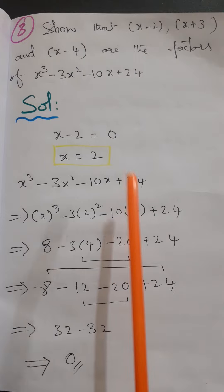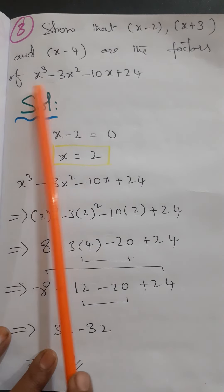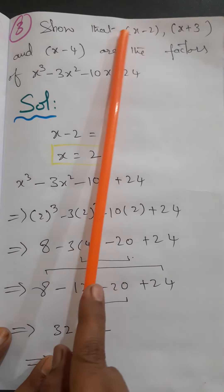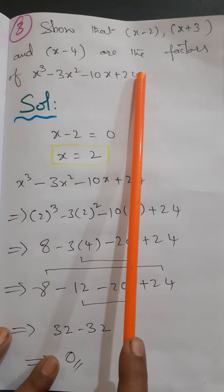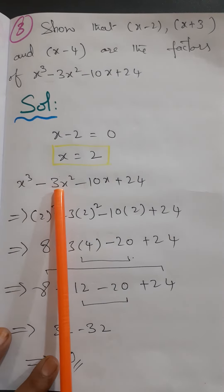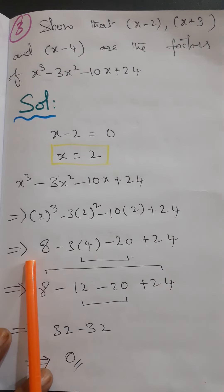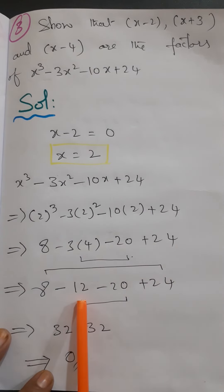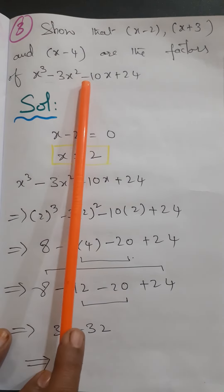Hence we prove the second question. Question 3: Show that (x - 2), (x + 3), and (x - 4) are factors of x³ - 3x² - 10x + 24. For x - 2 = 0, x = 2. Substituting x = 2: 8 - 12 - 20 + 24 = 32 - 32 = 0. So x - 2 is a factor of x³ - 3x² - 10x + 24.